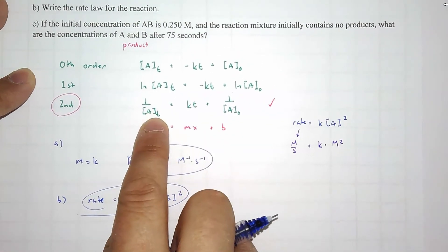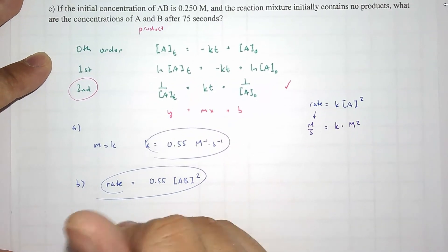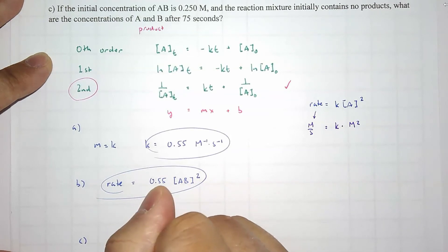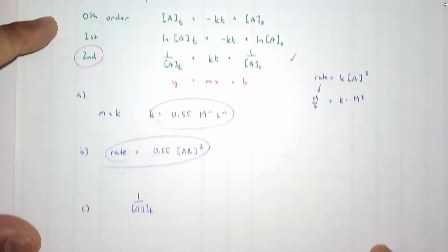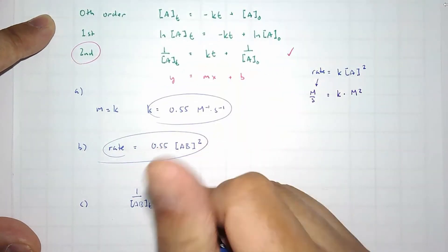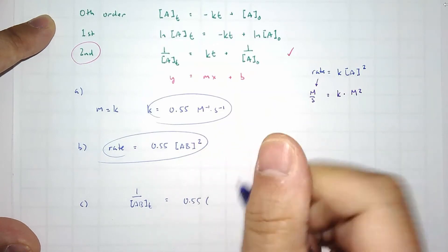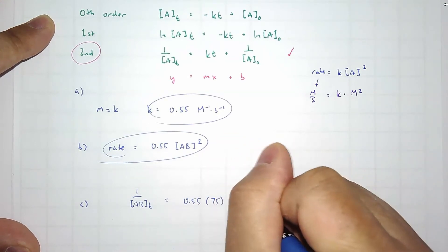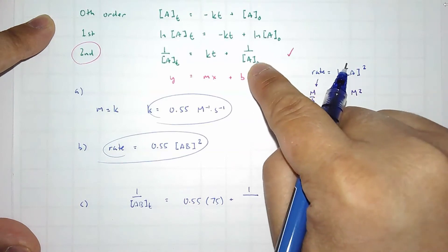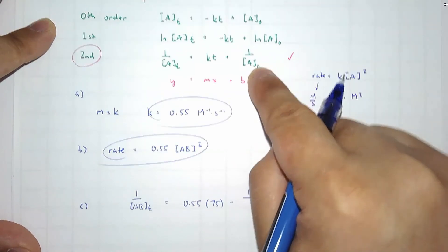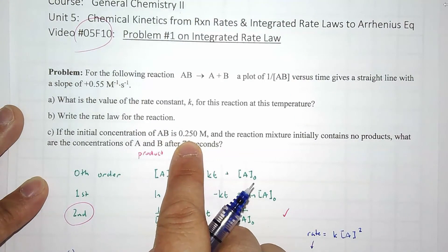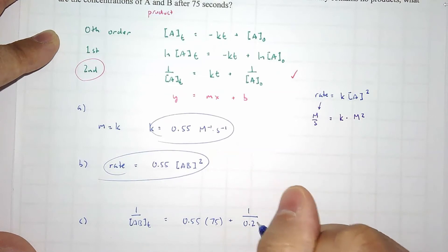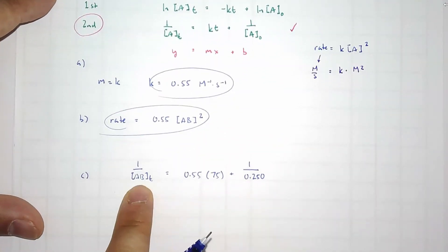Let us plug in to this equation these numbers. 1 over, so actually [AB] at some time point is the unknown, and we're using this equation right here. Equals 0.55 times 75 seconds plus 1 over, and it's the initial concentration of the starting material, which they said is 0.250 molar.